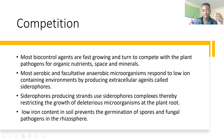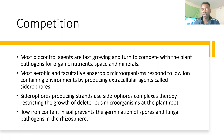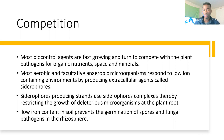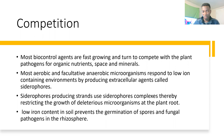Most aerobic and facultative anaerobic microorganisms respond to low iron-containing environments by producing extracellular agents called siderophores. Siderophore-producing strains use siderophore complexes at the plant roots, thereby restricting the growth of deleterious microorganisms at the root level, causing low iron content in the soil. If these pathogens don't have micronutrients like iron, they cannot survive — so that's a good way to eradicate plant pathogens by taking away what they need to survive.